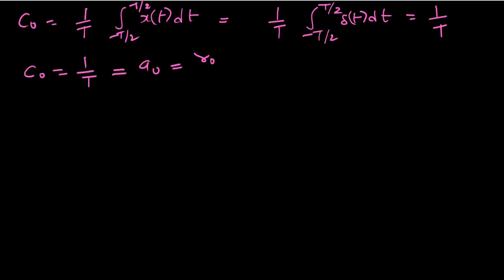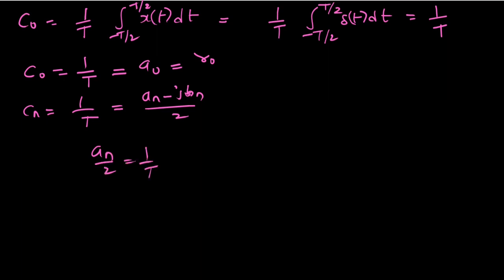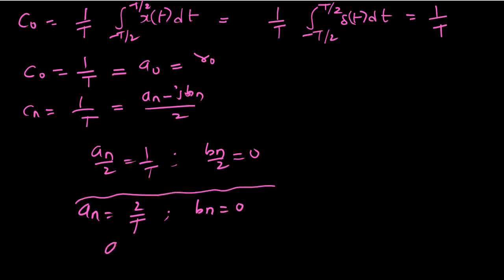We get C0 equal to 1/T, which equals a0. And Cn equals 1/T, which equals (an minus j bn) over 2. Comparing real and imaginary parts: an/2 equals 1/T, so an equals 2/T, and bn equals 0.